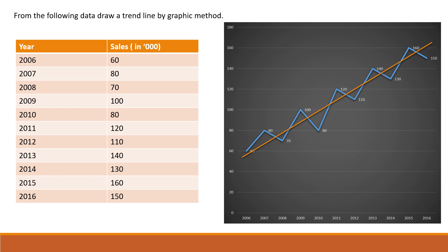But it suffers many limitations because it does not give accurate results — the trend line is drawn based on the number of points. It is not helpful for forecasting results and it is subjective because the trend line is drawn based on one's own judgment. One person can draw the trend line one way and another can draw it another way, so it is not the same for everyone. That is the main disadvantage of this method.